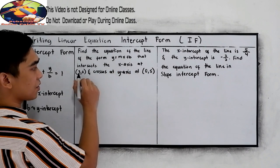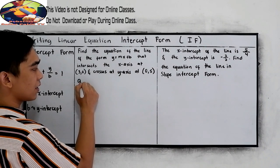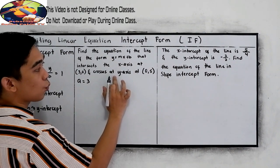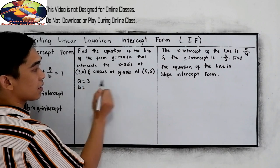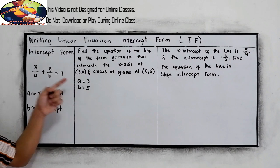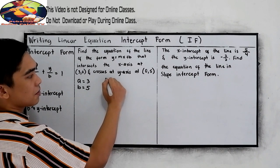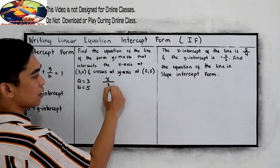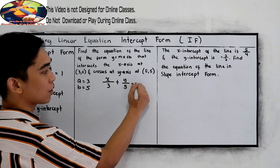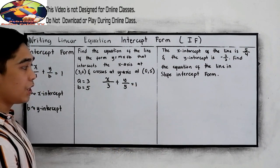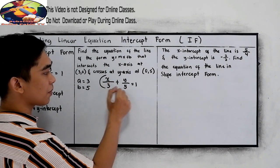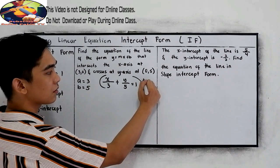So here, our x-intercept, or a, is 3, and our y-intercept is 5. Following our equation, let us substitute: x over 3 plus y over 5 is equal to 1. Now, we need to remove our denominator. So multiply it by the LCD of 3 and 5, that is 15.